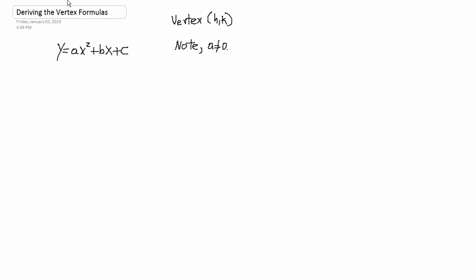So for right now, we'll just proceed by completing the square. So we can subtract C from both sides. Again, since this is a quadratic function, the quadratic coefficient A is not equal to zero. So we can subtract C from both sides. So Y minus C is equal to AX squared plus BX.